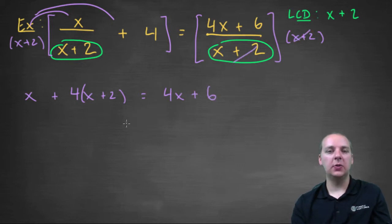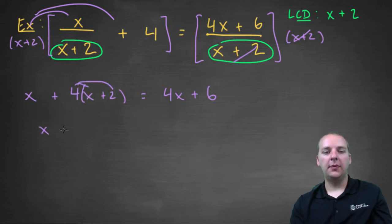Next up, clean up the left hand side, maybe distribute the four. x plus 4 times x plus 2 gives 5x plus 8 equals 4x plus 6. x and 4x make 5x plus 8 equals 4x plus 6.